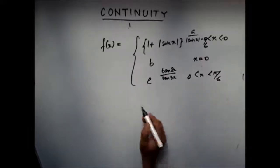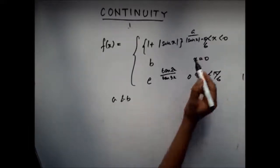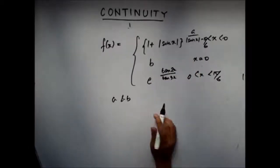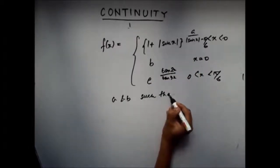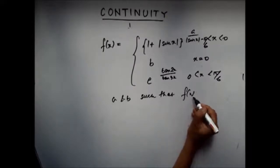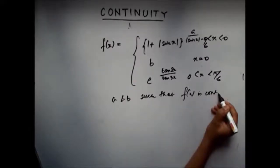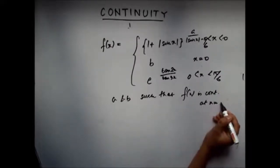Now, the question is find a and b such that f(x) is continuous at x = 0.